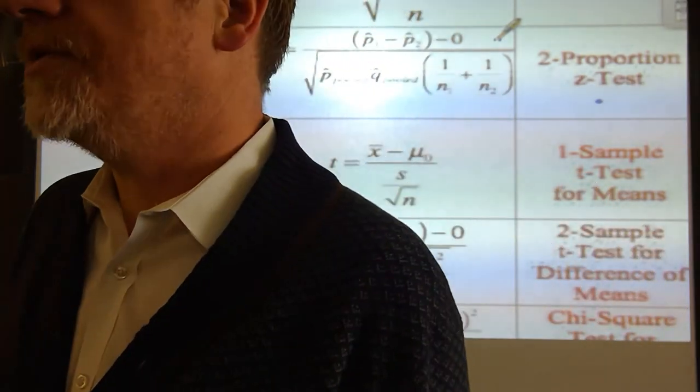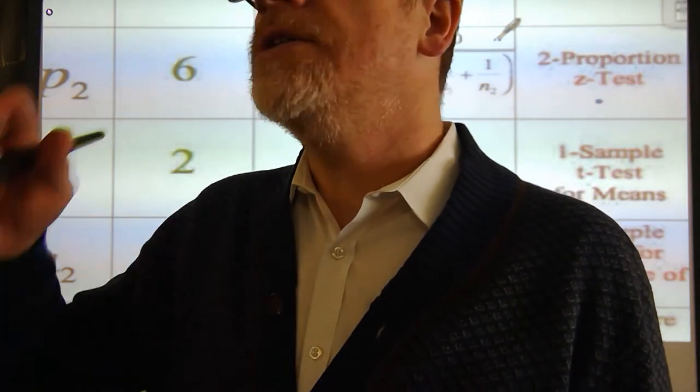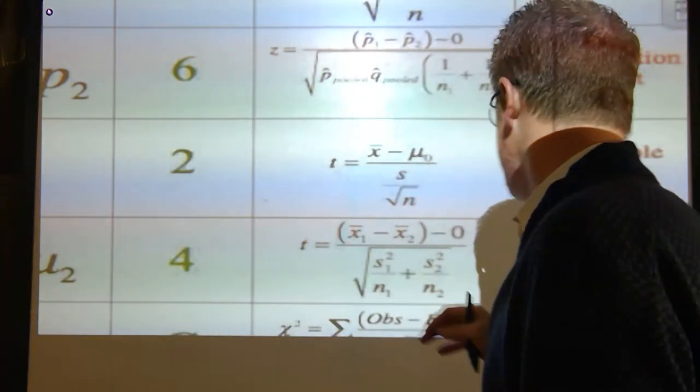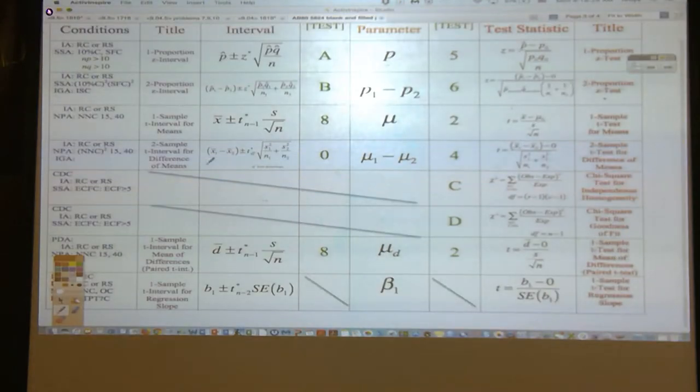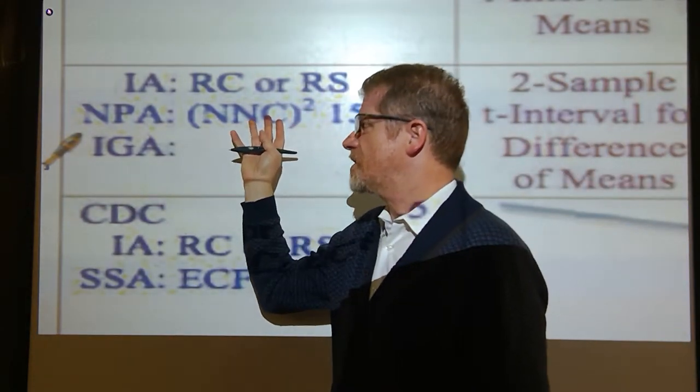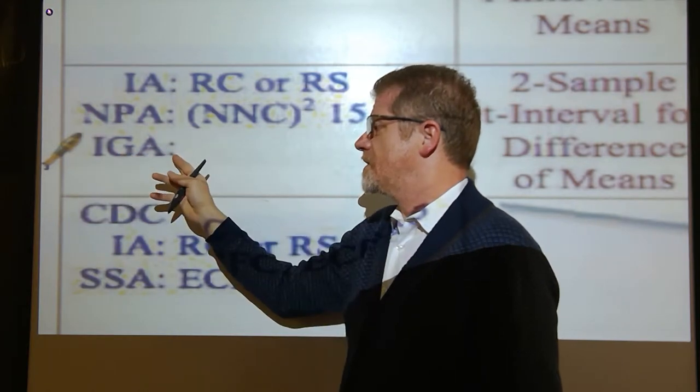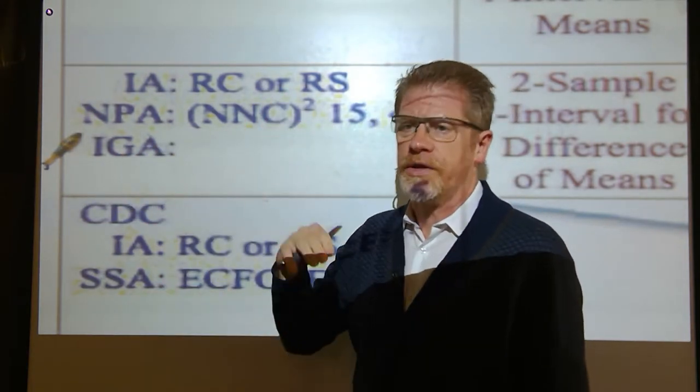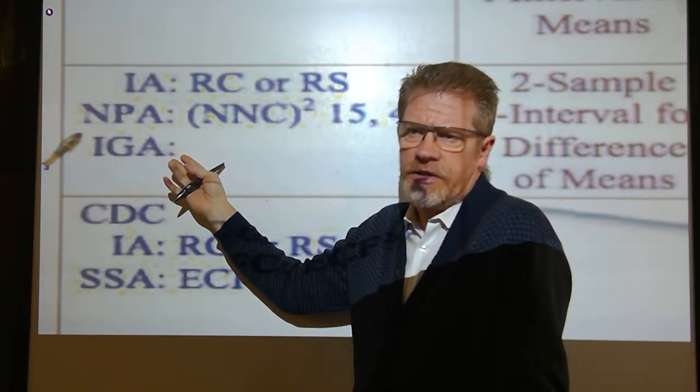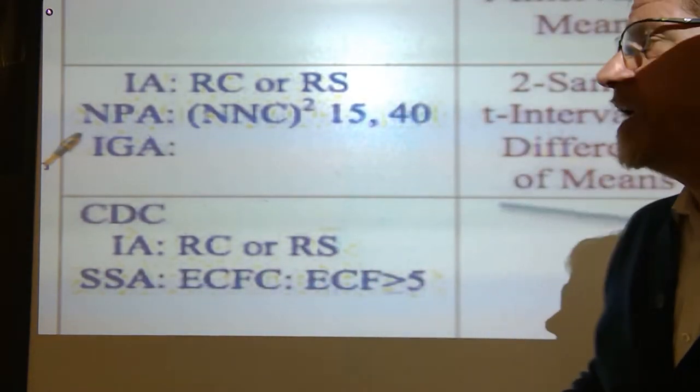Your calculator will tell you the degrees of freedom so you don't have to use crazy formulas. The standard deviation: we add the variances. So it's sample standard deviation one squared over N1 plus sample standard deviation two squared over N2. Those are the blueprints for building the difference of means trap.